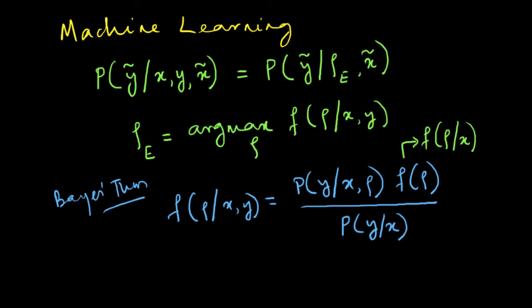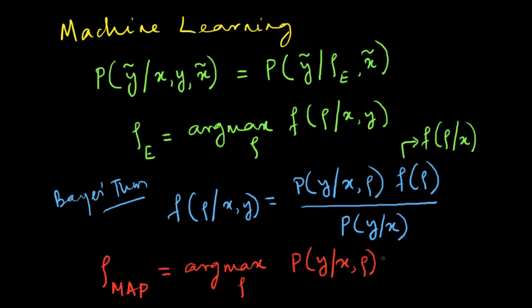Our MAP estimate, given by rho_MAP, is equal to argmax over rho of the probability of y given x and rho, multiplied by the distribution of rho. This is what we call the maximum a posteriori probability. The reason we keep f of rho is essentially because it helps us incorporate prior knowledge or, more generally, for avoiding overfitting.